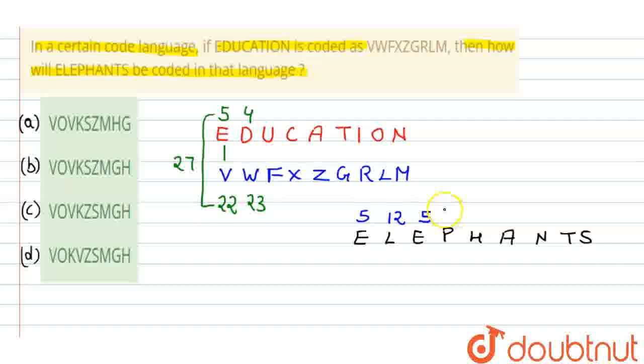P, sixteenth. Then H, eighth. Then A, our first term. Then N, fourteen. T, twenty. And S, nineteenth term.